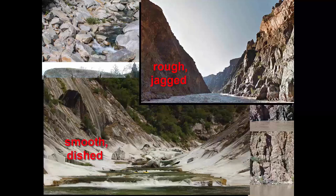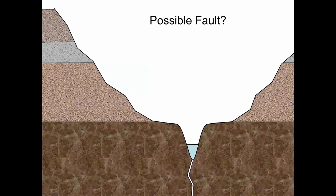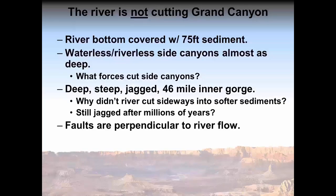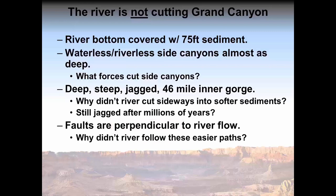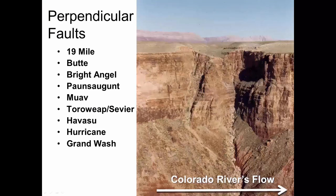No fault coinciding with the Inner Gorge has ever been reported. Many faults are found in the canyon, but surprisingly they generally run perpendicular to the river's flow. The river has ignored all of these deep faults and easier paths. Another challenge is the Kaibab Plateau — how could the river have cut uphill through this feature which is several thousand feet above the river? The Kaibab Upwarp is an upwarp in the topography on the much larger Colorado Plateau, lifting layers in this area a few thousand feet relative to the surroundings. If the Kaibab existed before the river, the river traveling southwest would have been stopped and either reversed its flow or cut a different path of least resistance around the upwarp.